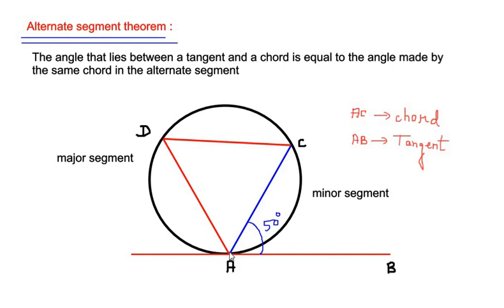And AC is a chord. A chord is any line which passes through two points in a circle. According to the theorem, the angle that lies between the tangent and chord—for example, I have taken 50 degrees—that is the angle between the chord AC and the tangent AB, is equal to the angle made by the same chord AC in the alternate segment.